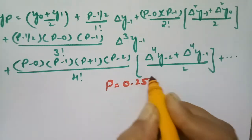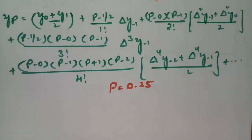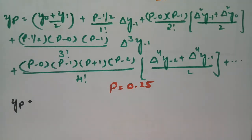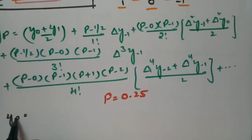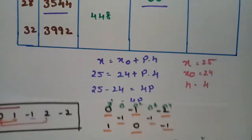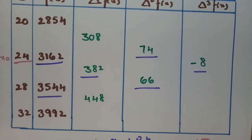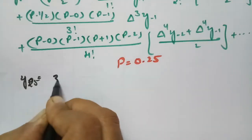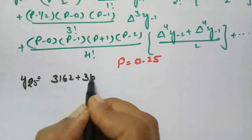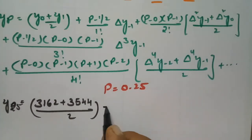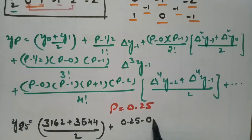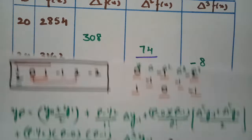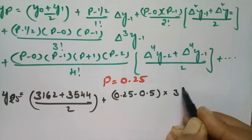With p = 0.25, substituting: y(25) = (y₀ + y₁)/2 + (p − 0.5) × Δy₋₁ + ... So (3162 + 3544)/2 = 3353. Then (0.25 − 0.5) × 382 = −0.25 × 382 = −95.5. The first difference value used is 382.